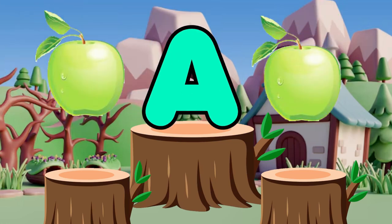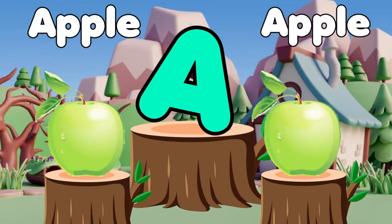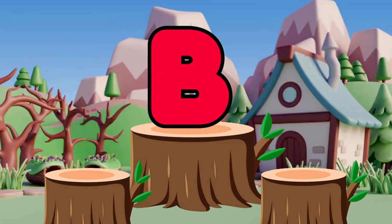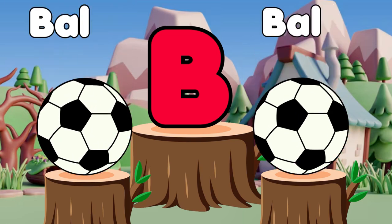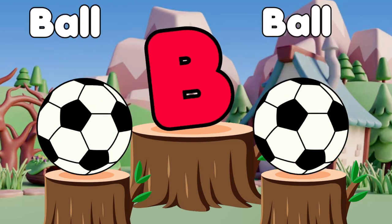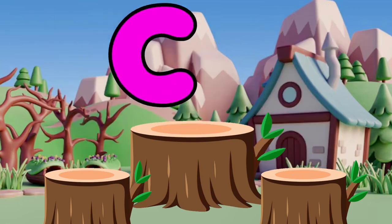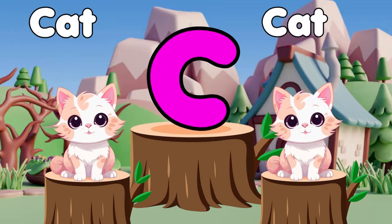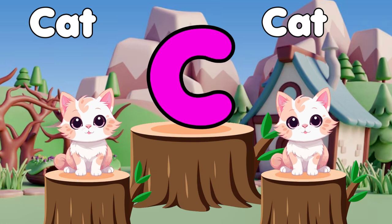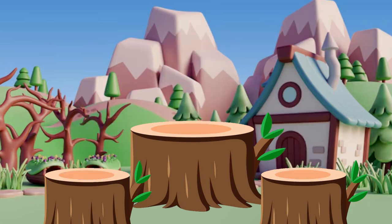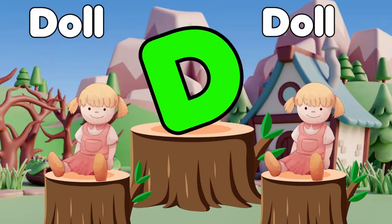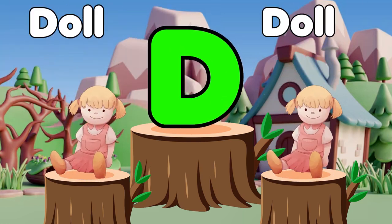A is for apple, a-a-apple. B is for ball, b-b-ball. C is for cat, c-c-cat. D is for doll, d-d-doll.